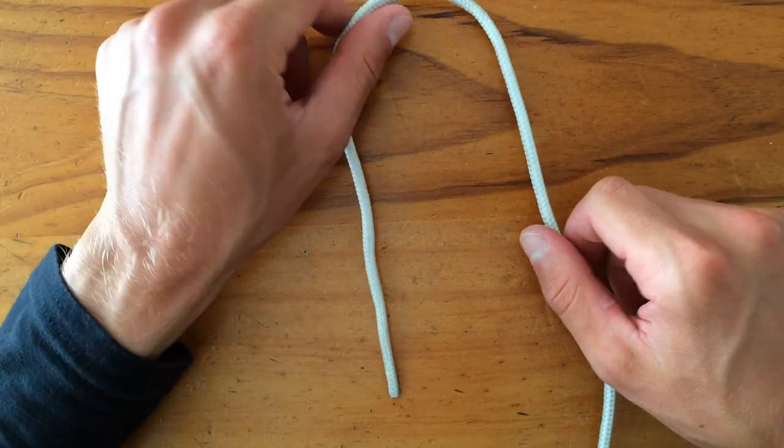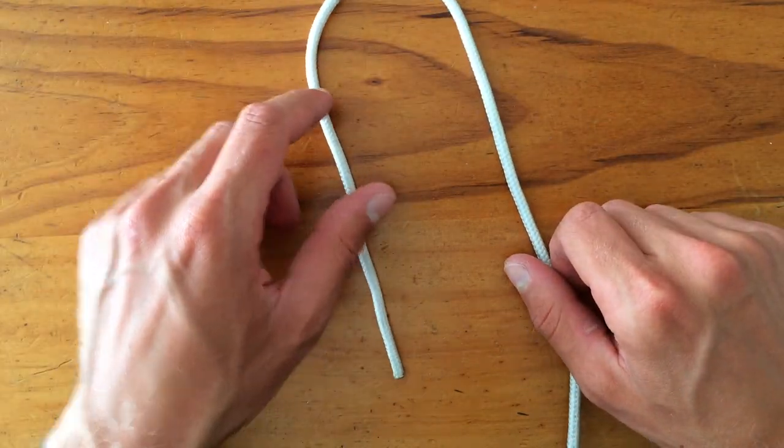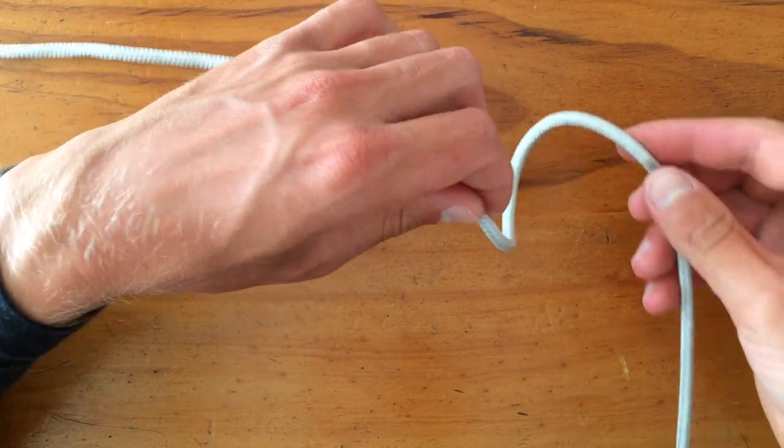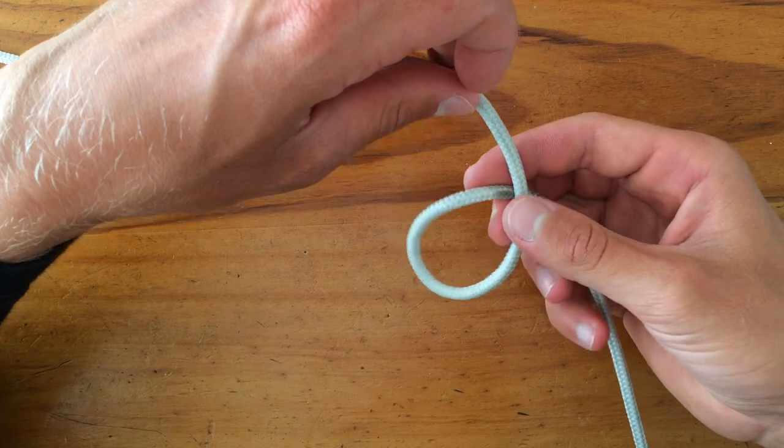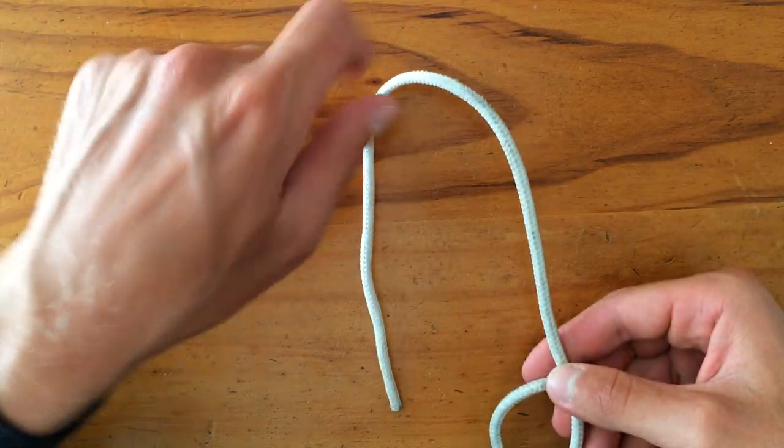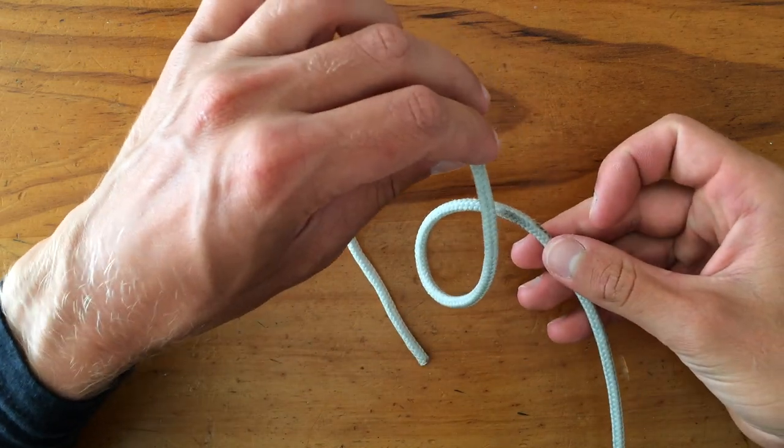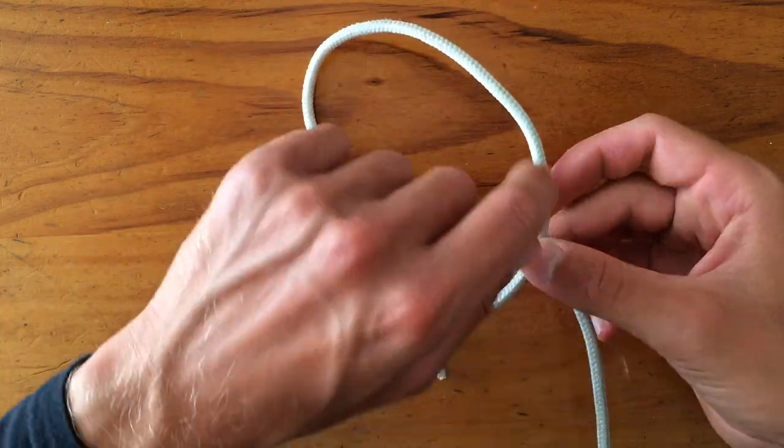Let me show you how to tie it again. Take your main line, make your loop, and make sure that the main line sits underneath the line that goes to whatever you're tying around. This is what you're tying around here, and this line is on top of your main line.